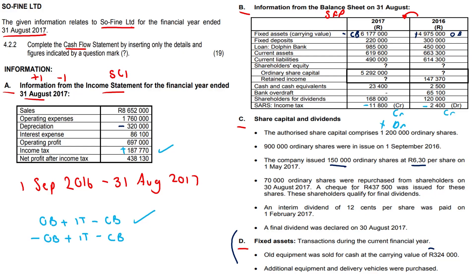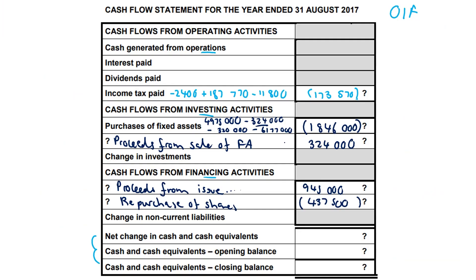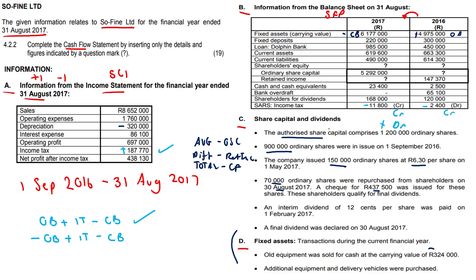For the repurchase of shares: 70,000 ordinary shares were repurchased from shareholders on 30 August 2017, and a cheque for 437,500 was issued. We always plug the total amount into cash flow. Remember: the average price goes into ordinary share capital, the difference between total and average goes into retained income, and the total amount you actually paid goes into cash flow. So we plug in 437,500 as an outflow. Authorized share capital allows up to 1,200,000 ordinary shares; 900,000 were issued — that's 75%.